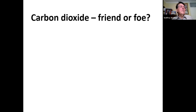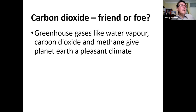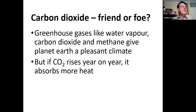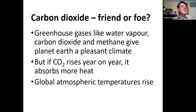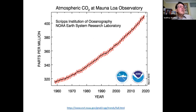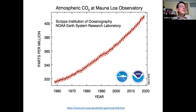Is carbon dioxide a friend or foe? Greenhouse gases like water vapour, carbon dioxide, and methane give planet Earth a pleasant climate — without any of them, the temperature of the Earth's surface would average minus 18 degrees centigrade. But if CO2 rises year on year it absorbs more heat and global temperatures rise. When I started teaching in 1973, carbon dioxide levels were 333 parts per million. It's now up to 420 parts per million as of May 2021 — carbon dioxide levels are at a record high for historical times. We call this curve the Keeling Curve.